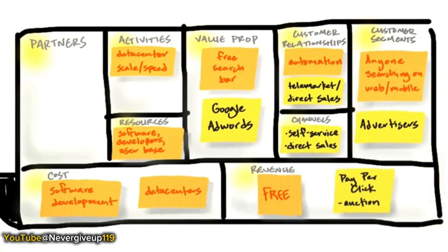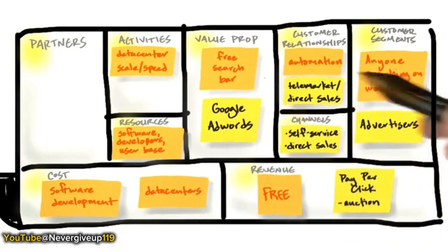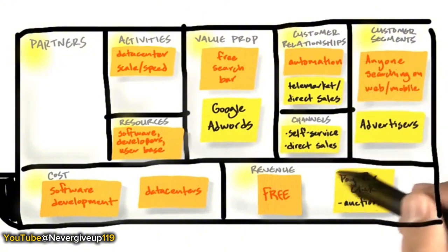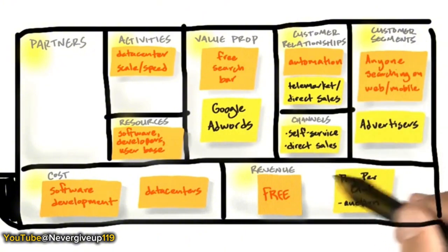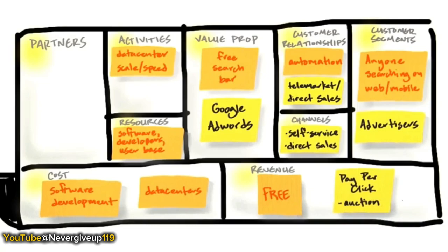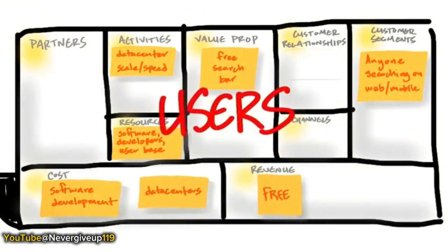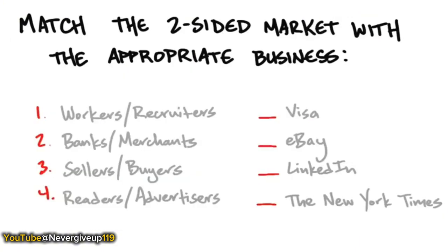That's a big idea: multiple customer segments require multiple value propositions, multiple customer relationships, sometimes different channels, but always different revenue models. These are the payers. Google Search is what we call a two-sided market — there are users and there are payers. As we discussed, some businesses are multi-sided.